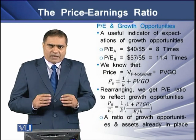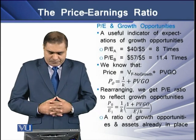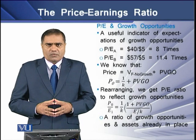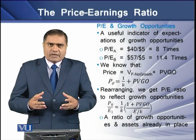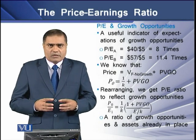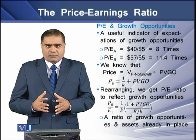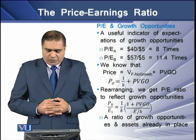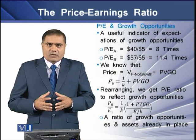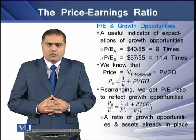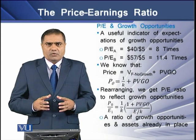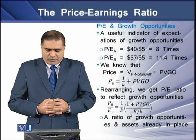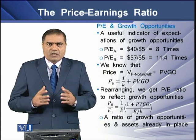Apparently, firm B has more growth opportunities than firm A. We know that price equals the value of the firm with no growth opportunities plus the present value of growth opportunities. Quantifying this equation: P₀ = (E₁/k) + PVGO. Rearranging gives the price-earning ratio as: P/E = (1/k) × [1 + PVGO / (E/k)], reflecting growth opportunities.